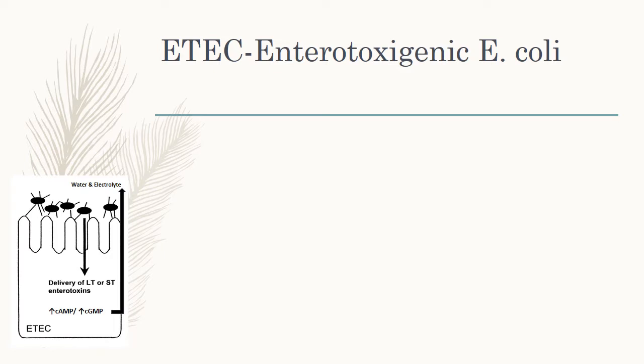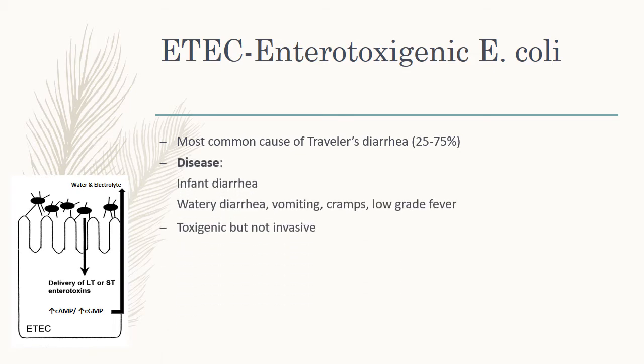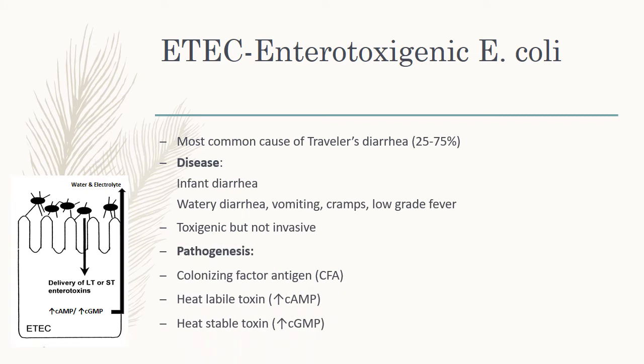The next one is ETEC, enterotoxigenic E. coli. ETEC is the most common cause of travellers' diarrhea, causing 25 to 75% of cases. The disease causes acute watery diarrhea, vomiting, cramps, and low-grade fever in infants as well as adults. It is toxigenic but not invasive.